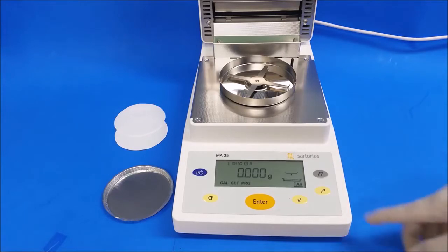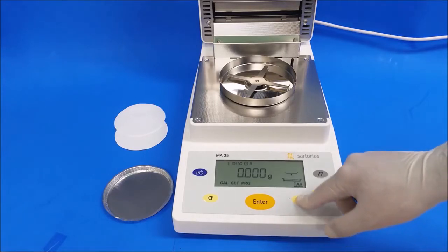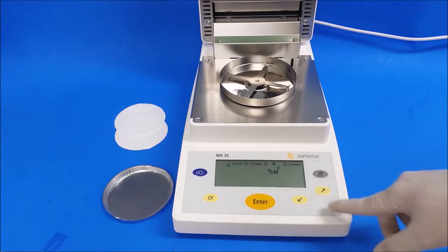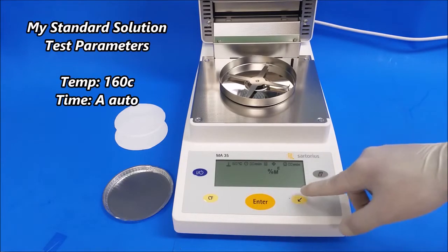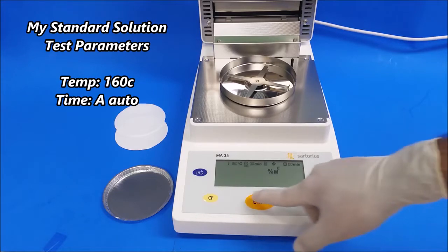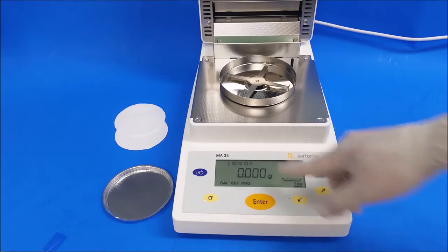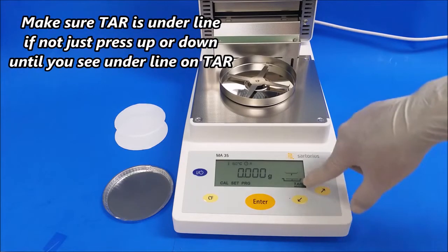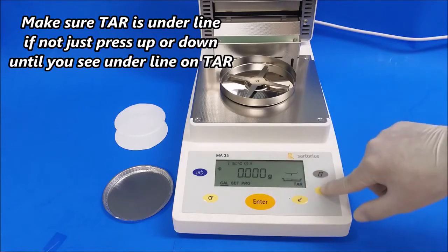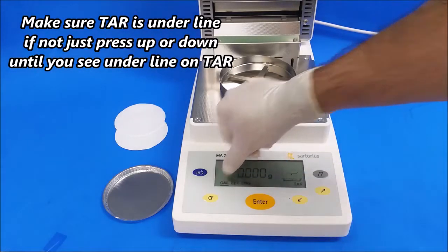Now I'm going to change the test parameters because I need to run a standard solution test. Go to program, enter. I already have it at 160 and it's already on auto, and you're going to make sure when you're going to tear, you have to be underlining tear, so make sure it's not underlining tau.